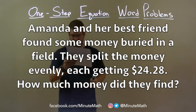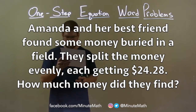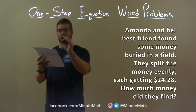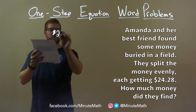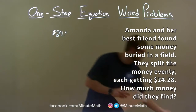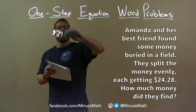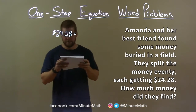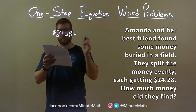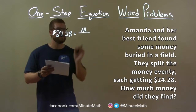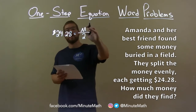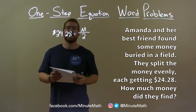Amanda and her best friend found some money buried in a field. They split the money evenly, each getting $24.28 — excuse me, $28. The total money found, M, divided by 2 equals $24.28. Now we have our equation: total money divided by 2 equals $28.